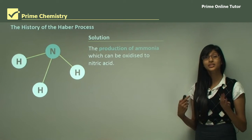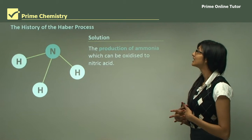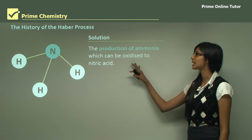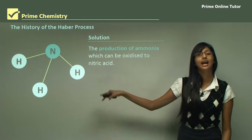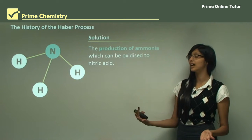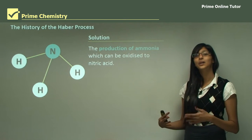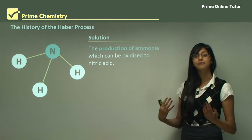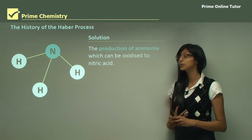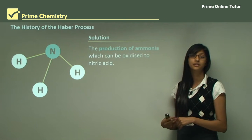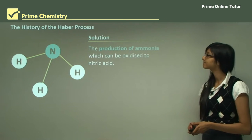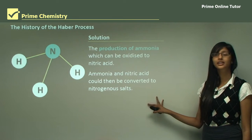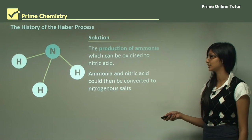The solution to these problems was the production of ammonia, which can be oxidized to nitric acid. A scientist called Haber developed a process by which ammonia can be generated, and we will look at why this was beneficial to Germany. Ammonia and nitric acid could also be converted into nitrogenous salts.